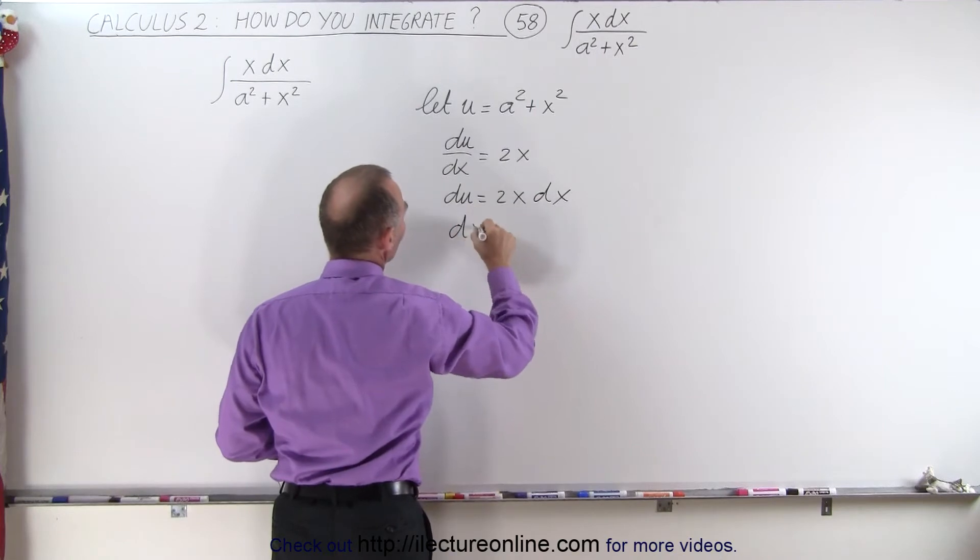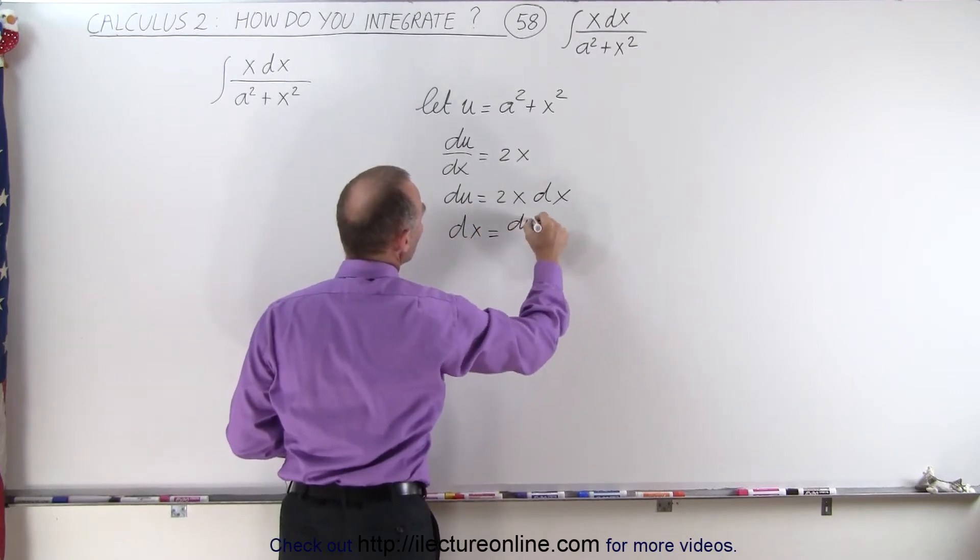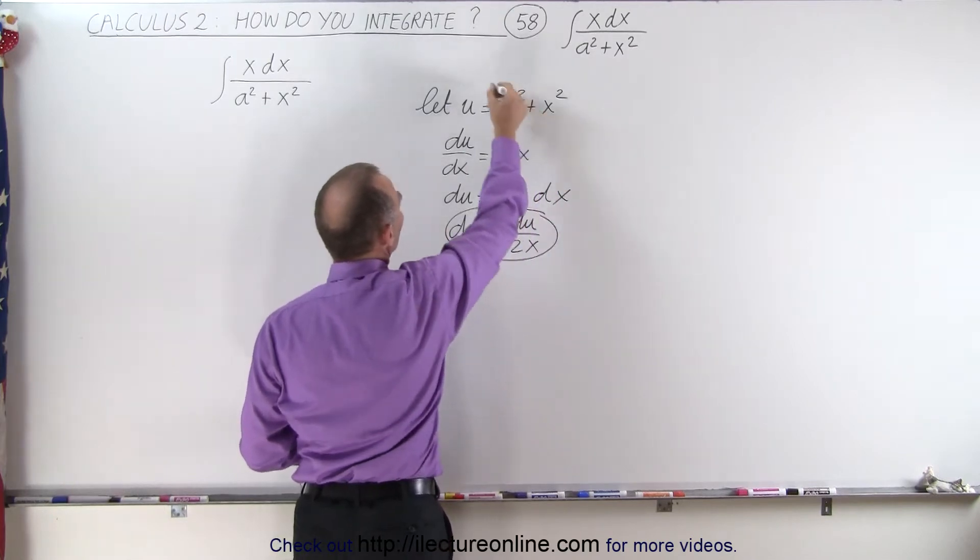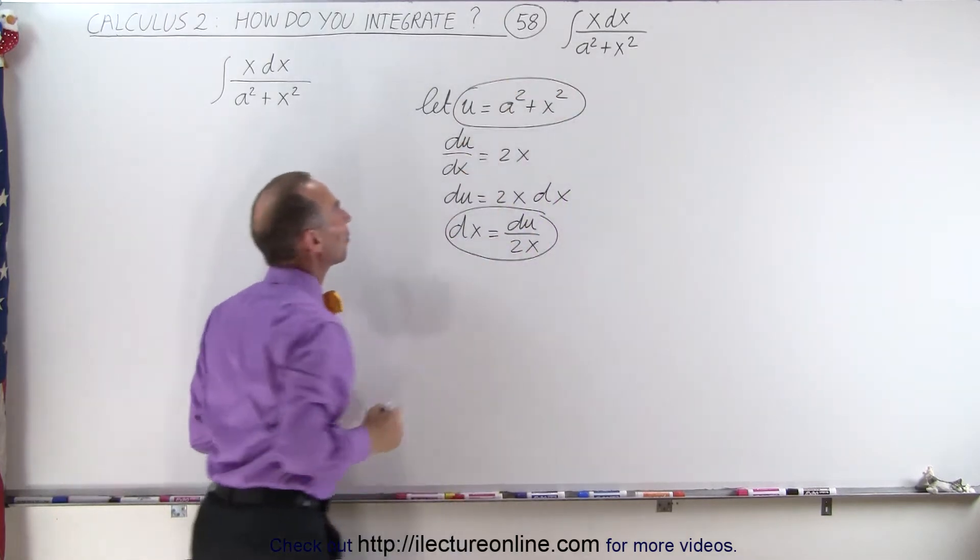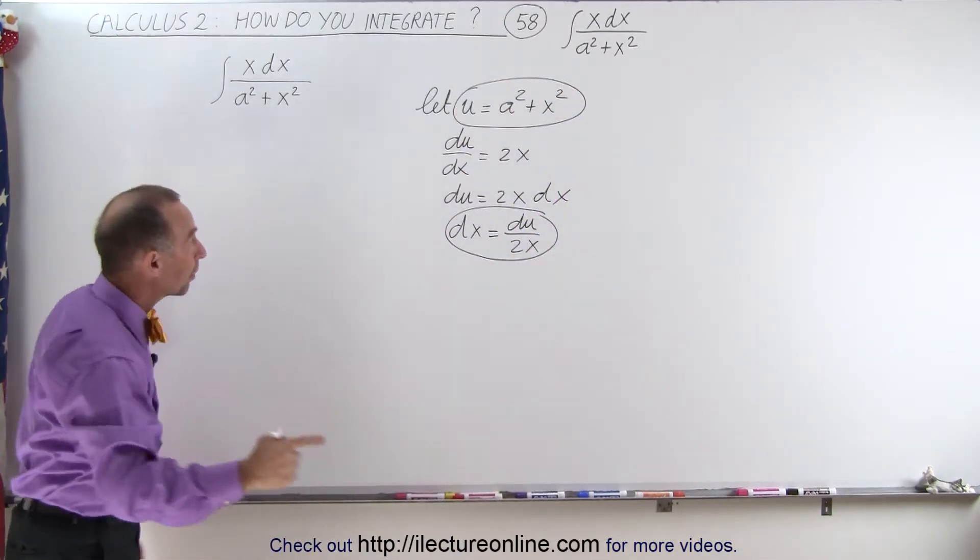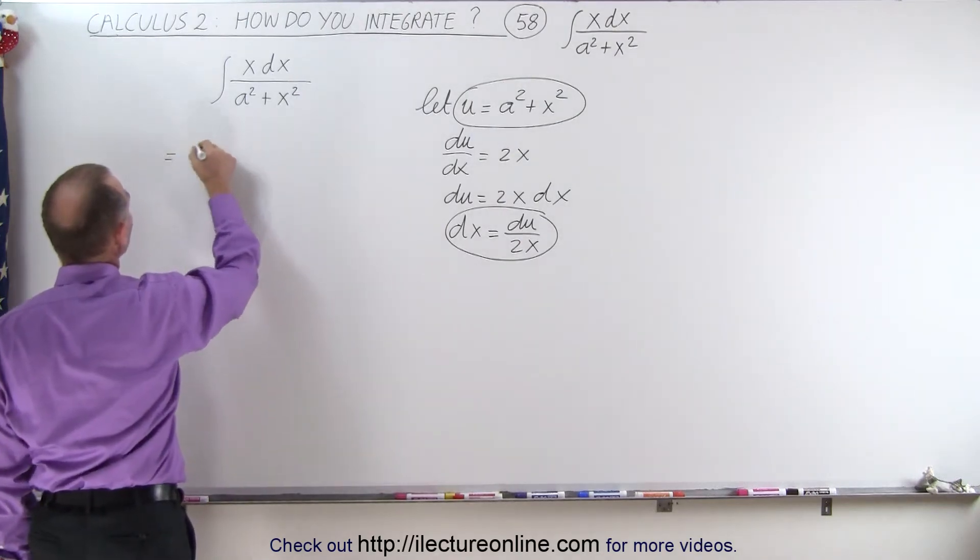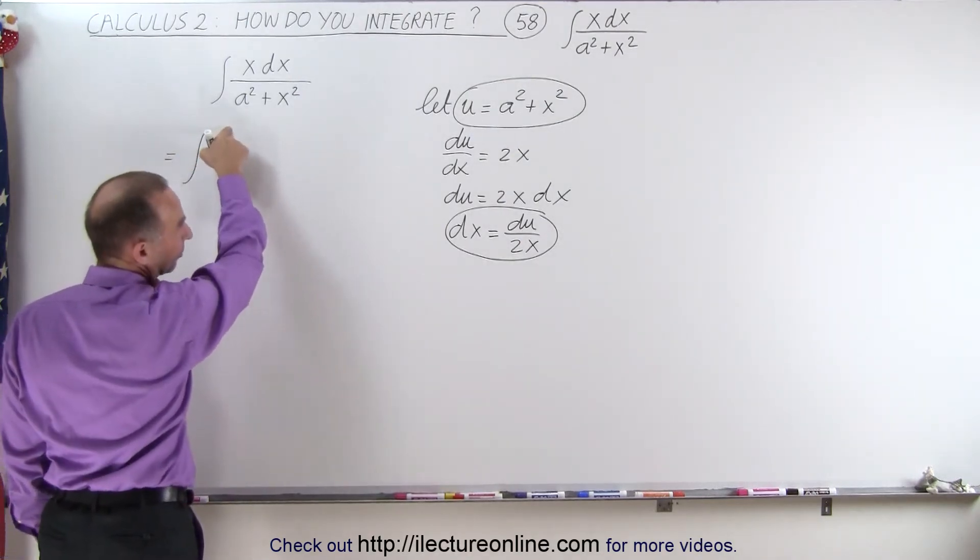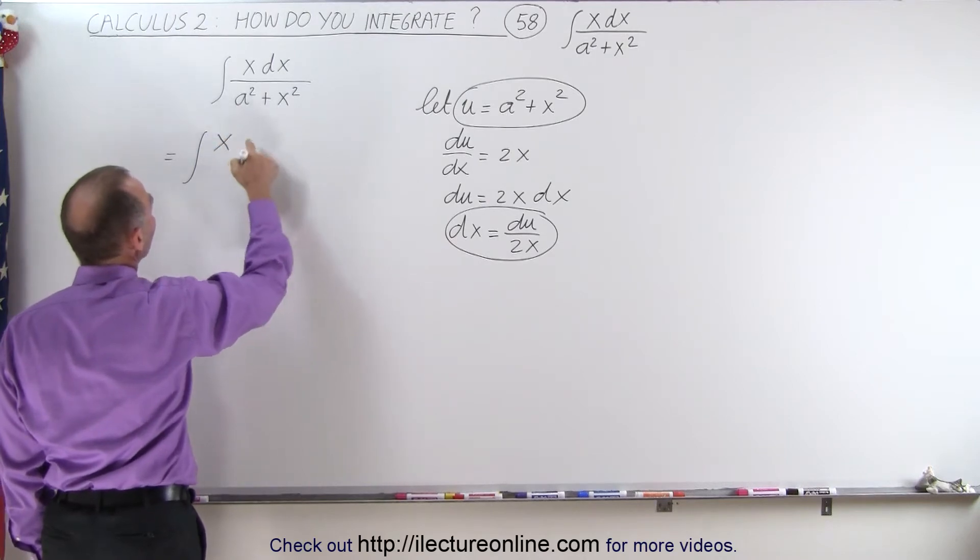or dx can be replaced by du divided by 2x. So that's the trick that we use. We simply use a substitution of u, and when we plug that into our integral, we get the integral of, instead of x, we're going to leave x there.